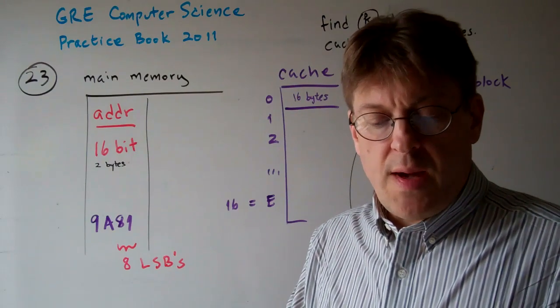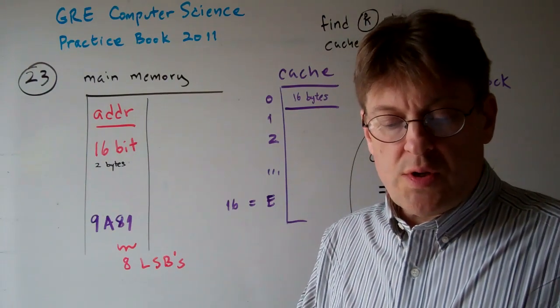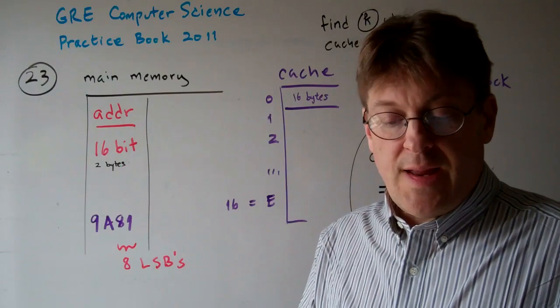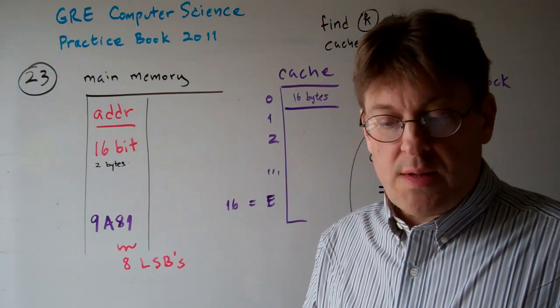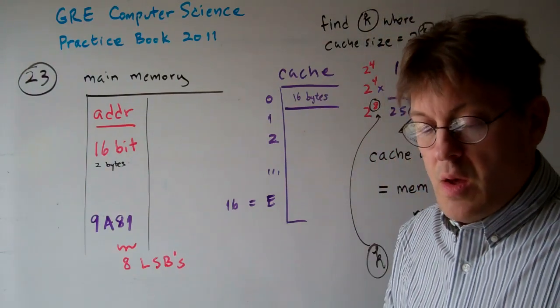Assuming this is a direct mapped cache, to which cache block will main memory address 9A81, base 16? Where will that map?